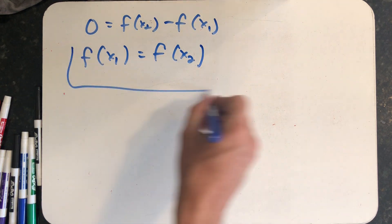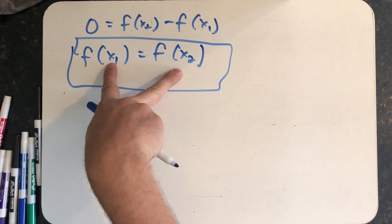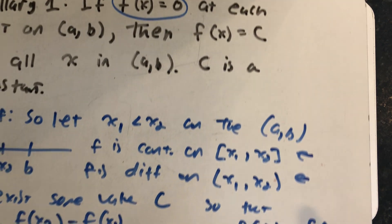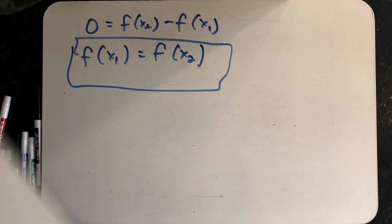And this really tells me everything I need to know. For every choice of two x's between a and b, I always have to get the same y value. Well, if I'm always getting the same y value, that means all of the y values were equal to some constant.